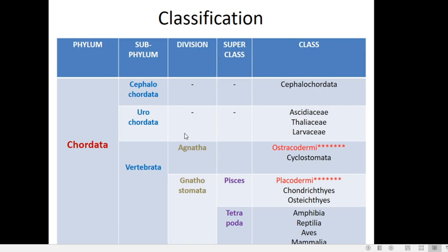Gnathostomata is divided into two superclasses: Pisces and Tetrapoda. Pisces are jawed vertebrates that move with the help of fins. Tetrapoda are jawed vertebrates that move with the help of four limbs — that is the meaning of the name Tetrapoda.